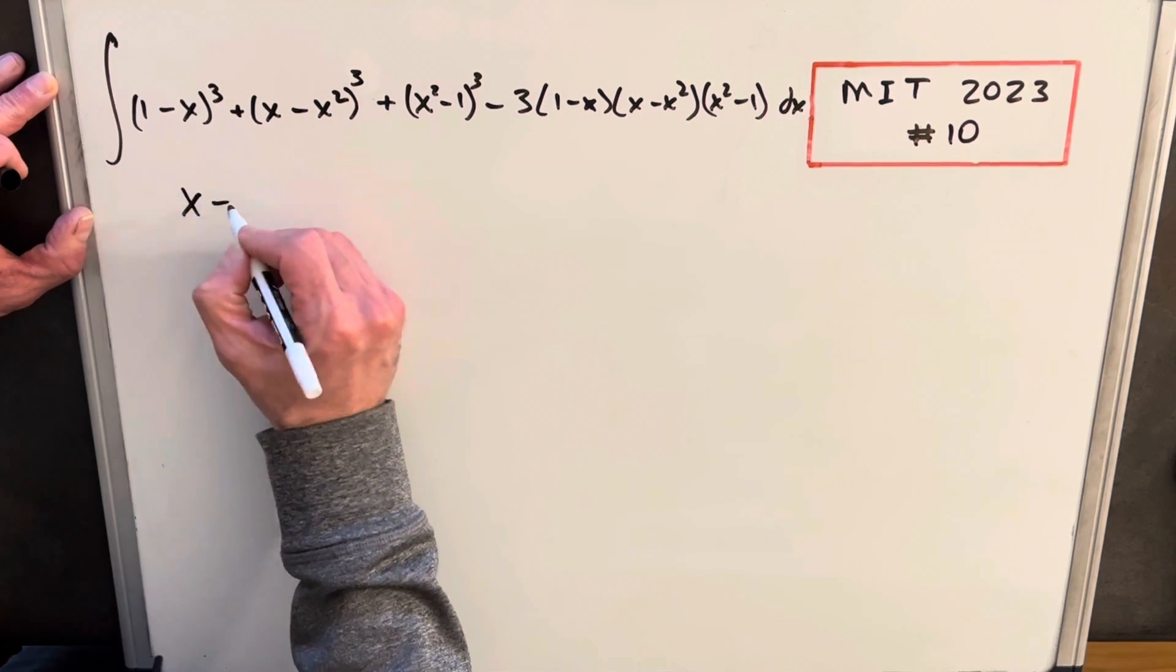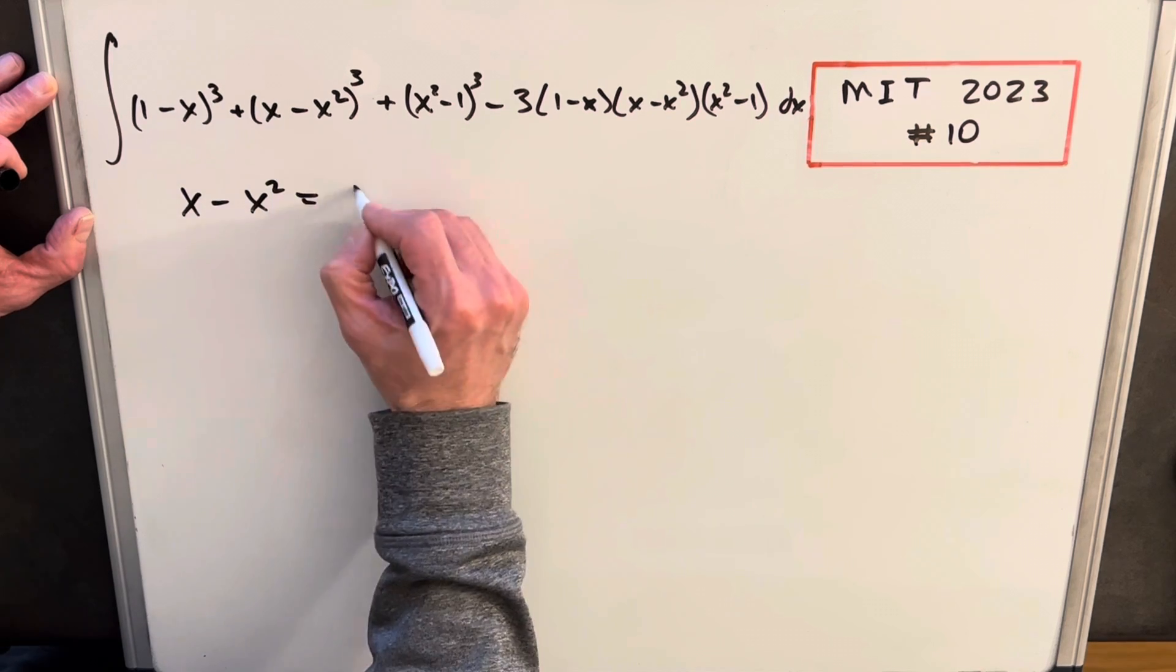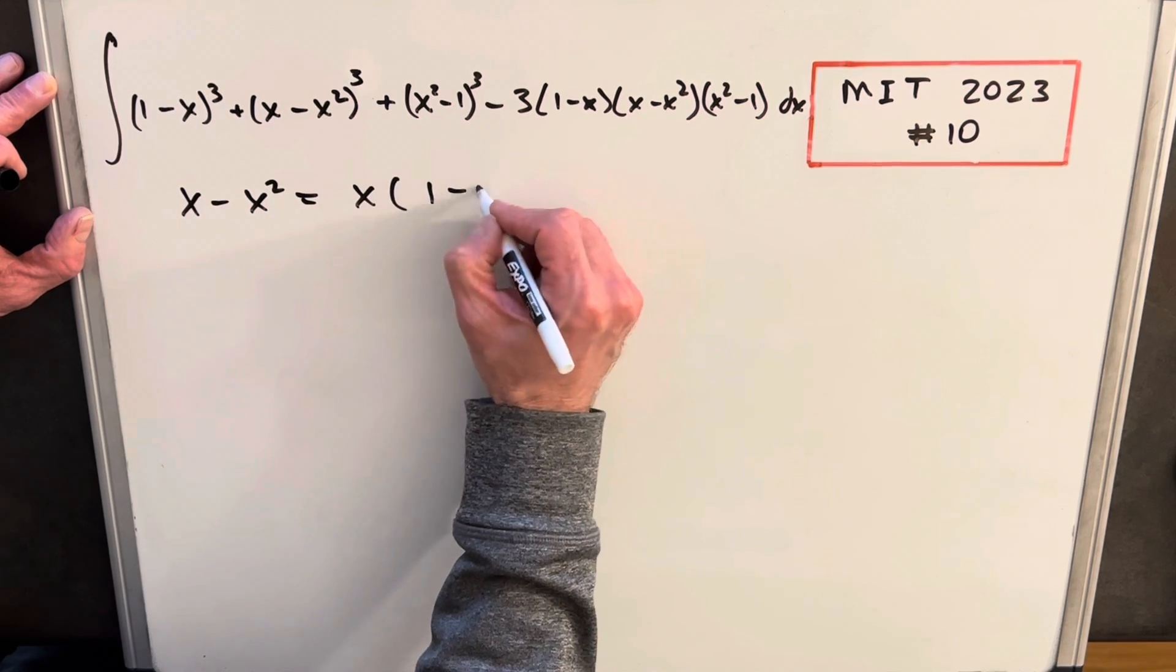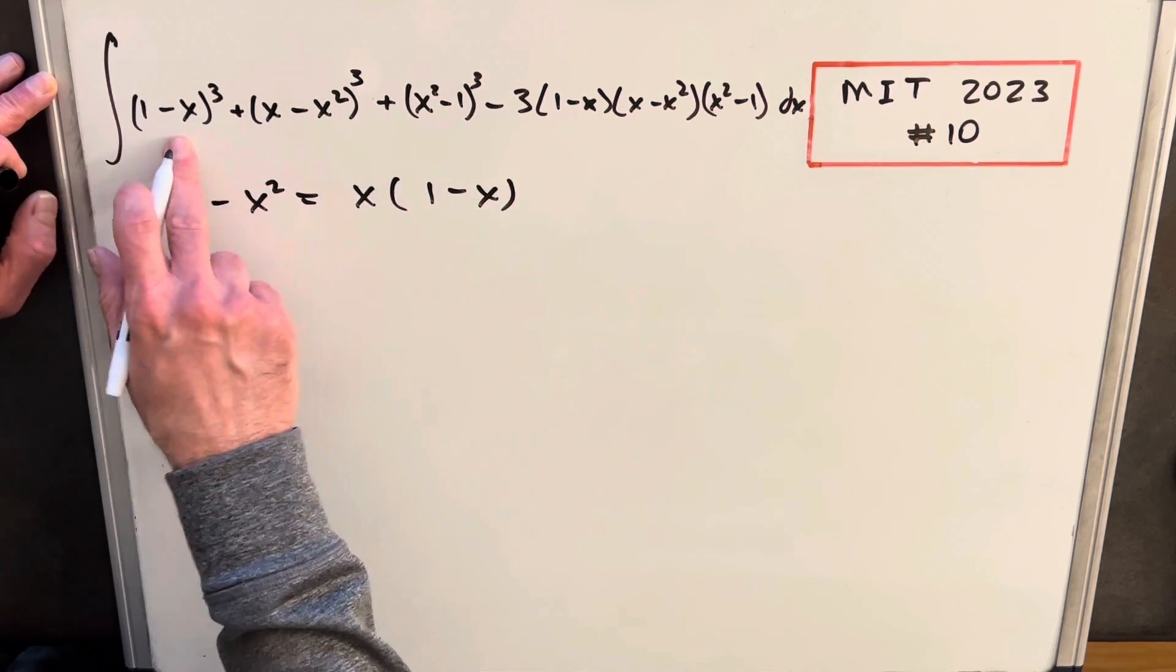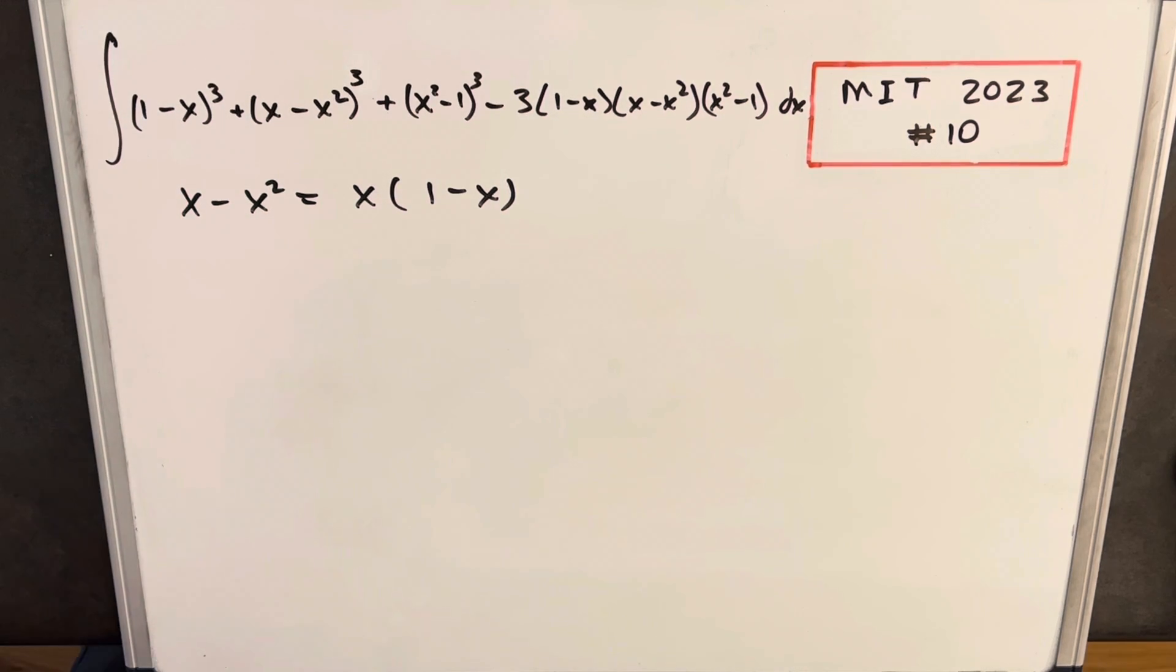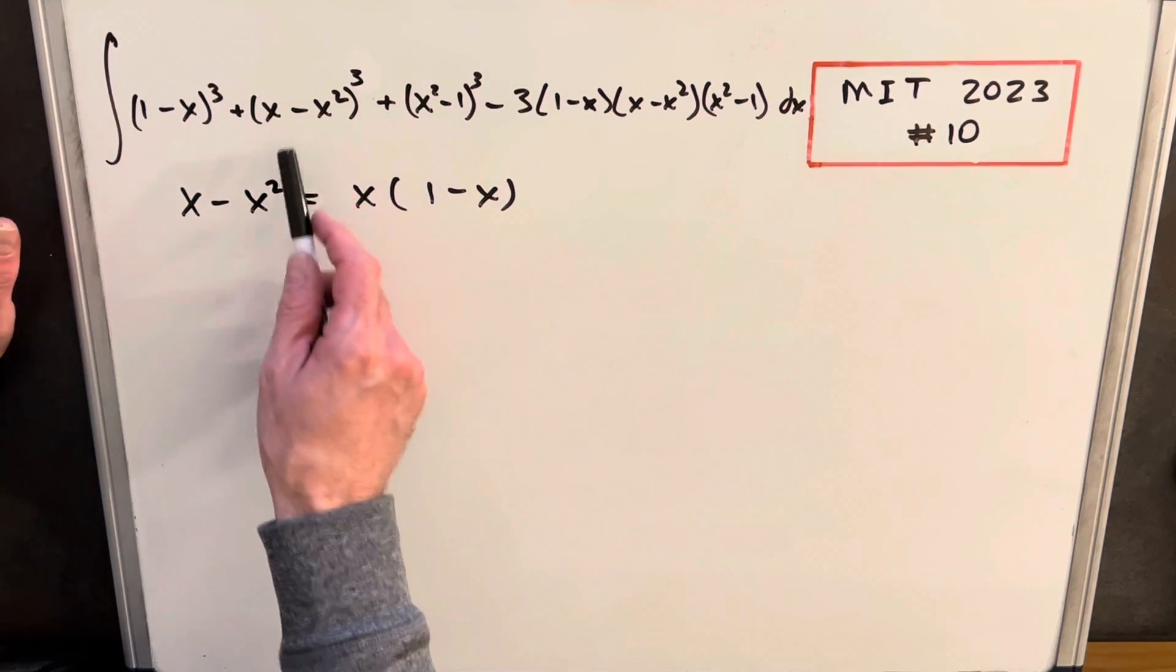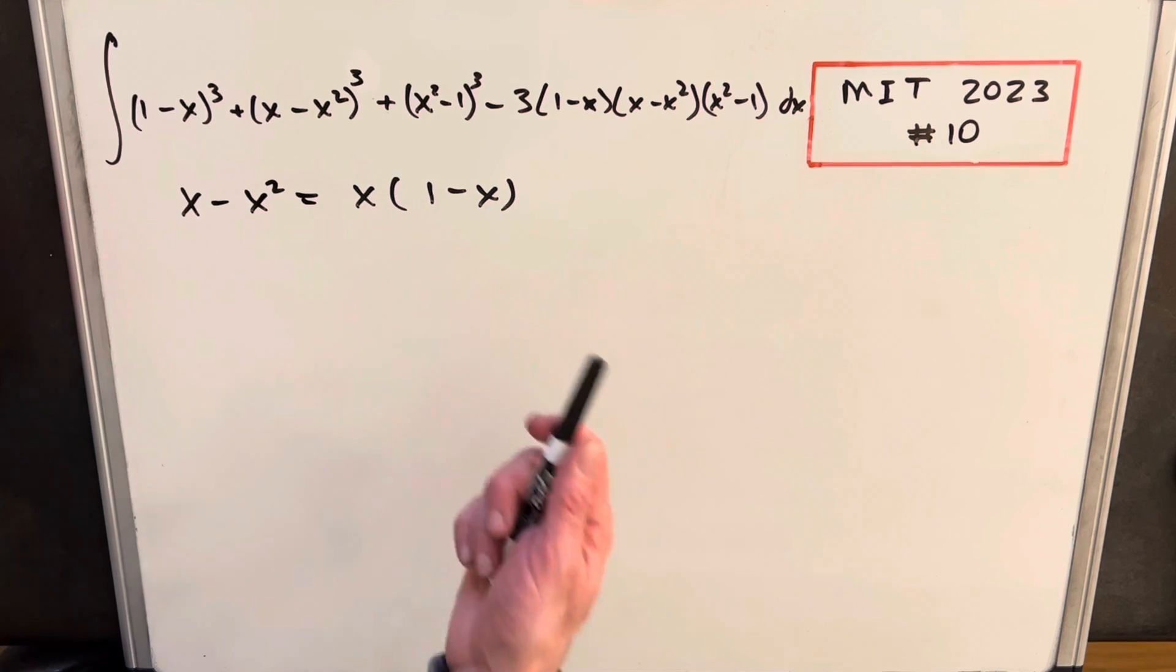To start, I want to look at x minus x squared and just factor an x out of this. And notice that we get a 1 minus x, which is good because we have that in common with this term. So I think we can use this. And when we cube it, of course, we're going to have x cubed and this term cubed.